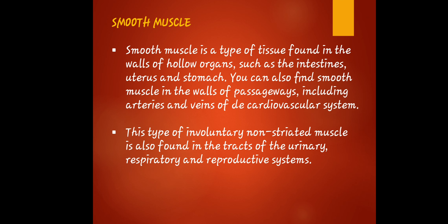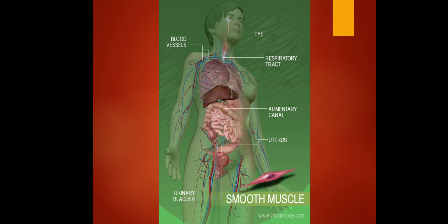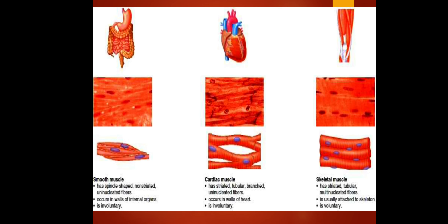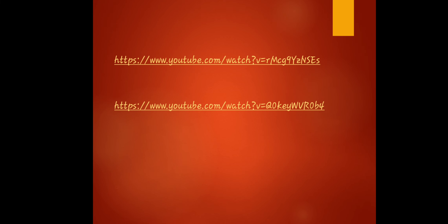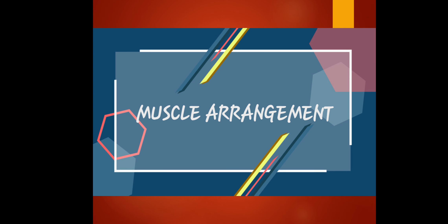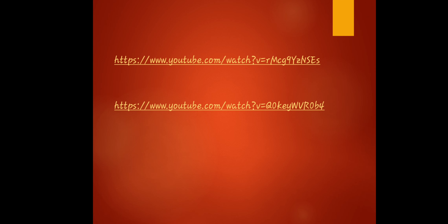Smooth muscle tissue, unlike striated muscle, contracts slowly and automatically. It constitutes much of the musculature of internal organs and the digestive system. A picture shows the parts of the body where smooth muscle tissue is located — from the eye to the respiratory tract, blood vessels, alimentary canal, uterus, and urinary bladder. There is also a summarization table comparing smooth muscle, cardiac muscle, and skeletal muscle.